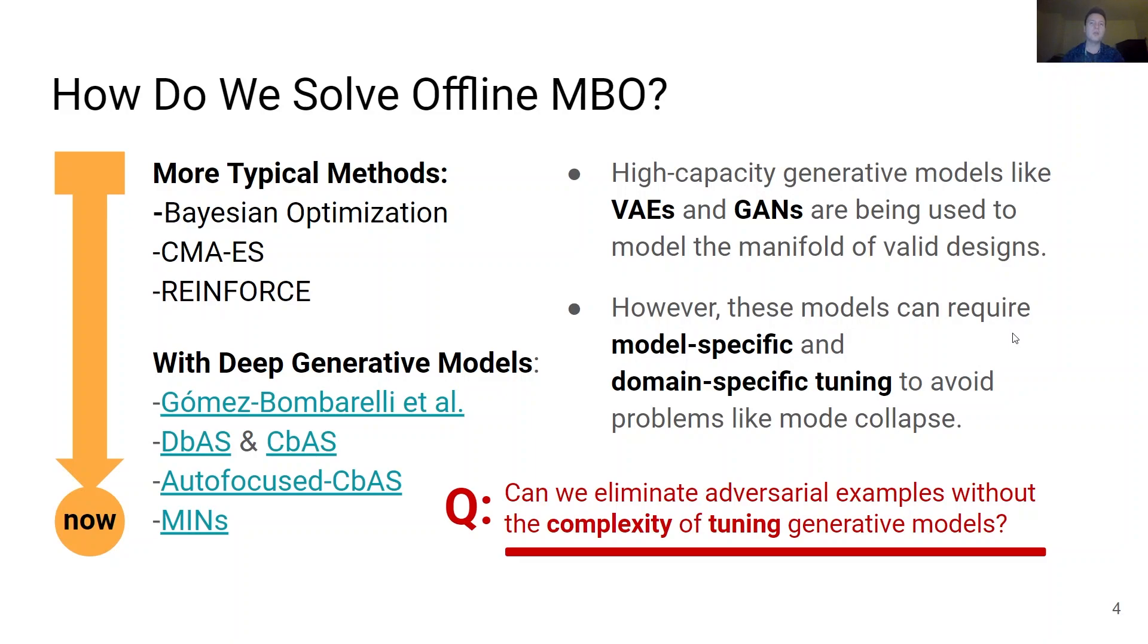Thus, in this work, we investigate if we can eliminate adversarial examples without the complexity of tuning and learning a generative model, by utilizing only a single predictive model trained with supervised learning while utilizing simple optimization schemes such as gradient descent on the predictions of the learned function.